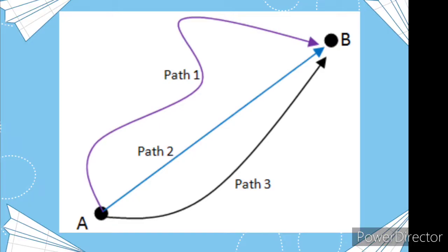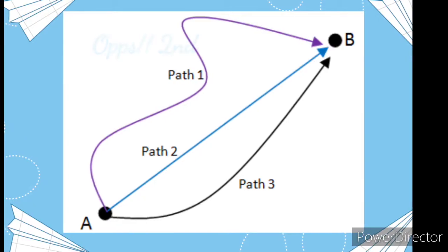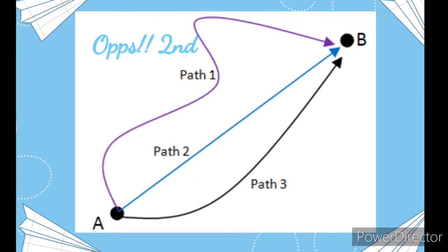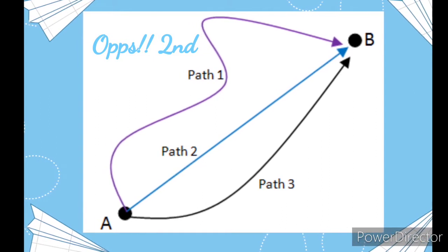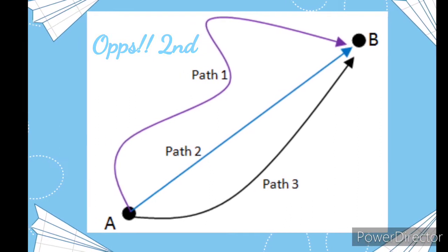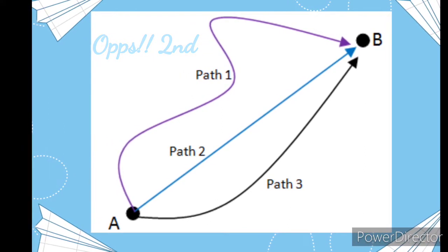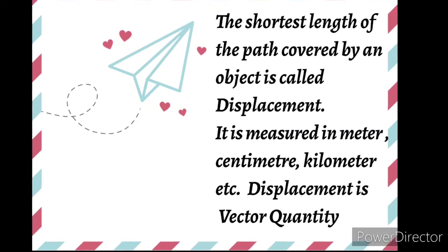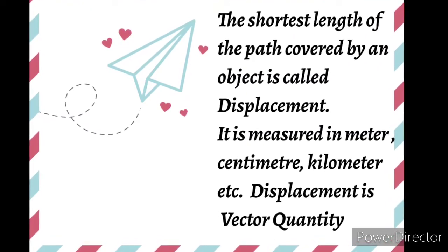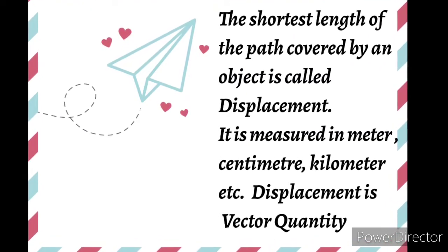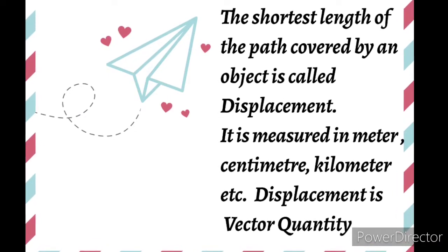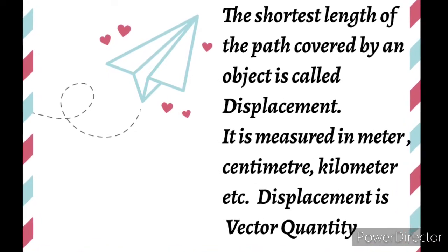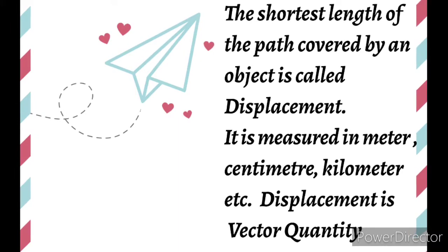Now, while going to your friend's house, if you took the shortest path, then the shortest path covered by you is displacement. Hence, the shortest length of the path covered by an object is called displacement.